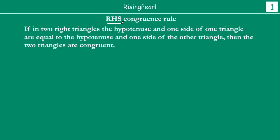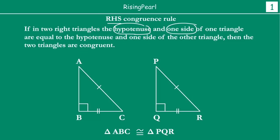We will start by defining the RHS congruence rule. RHS congruence rule states that if in two triangles the hypotenuse and one side of one triangle are equal to the hypotenuse and one side of the other triangle, then the two triangles are congruent. In other words, if the hypotenuse and any one side are equal in both triangles, then those two triangles are congruent.